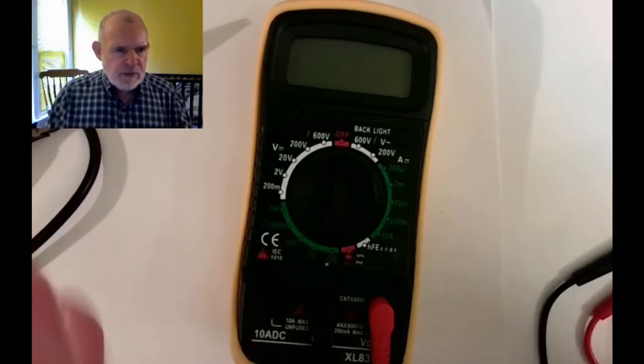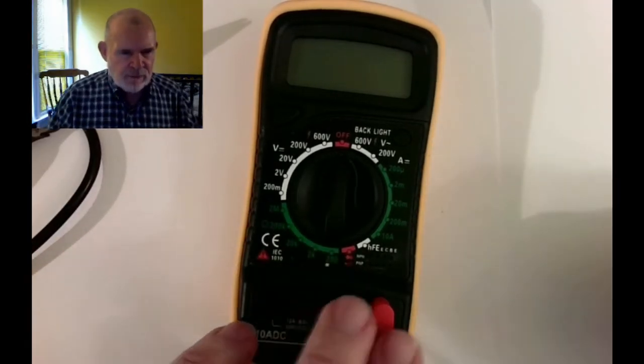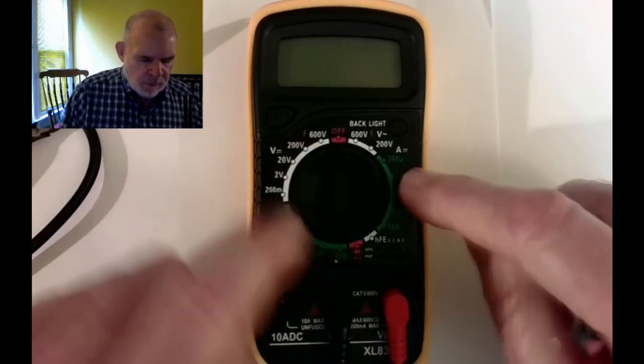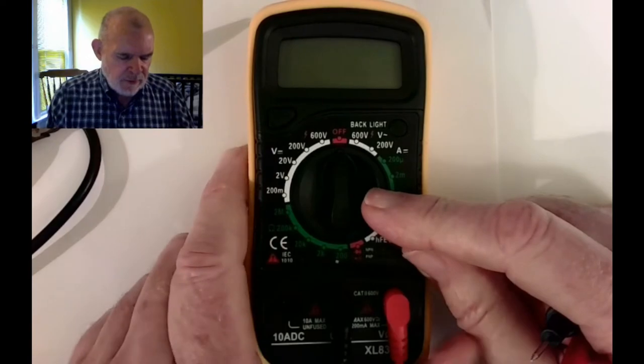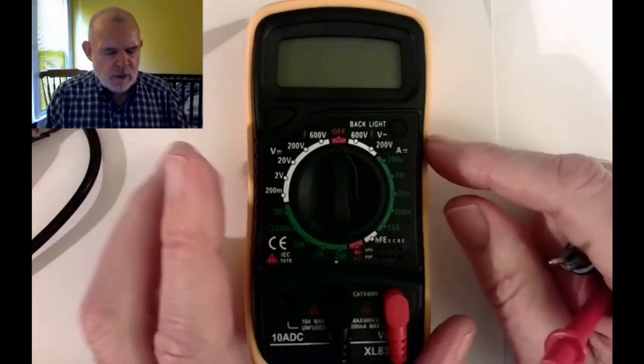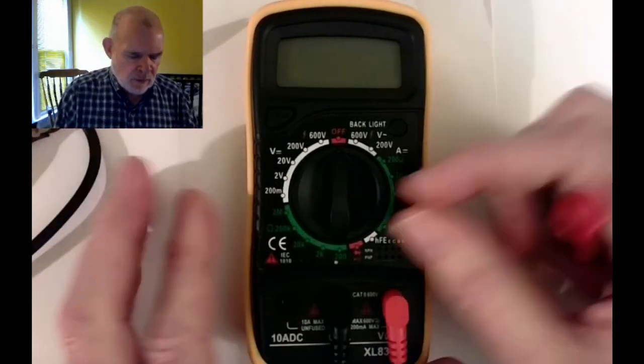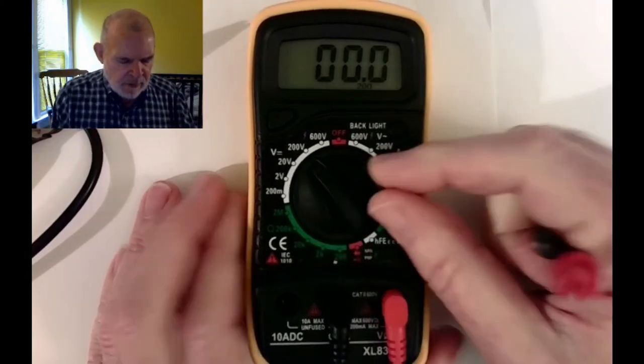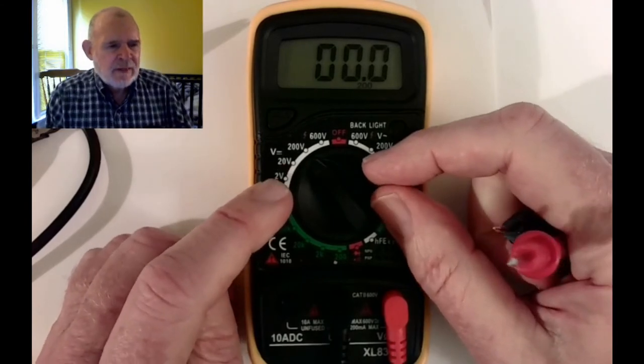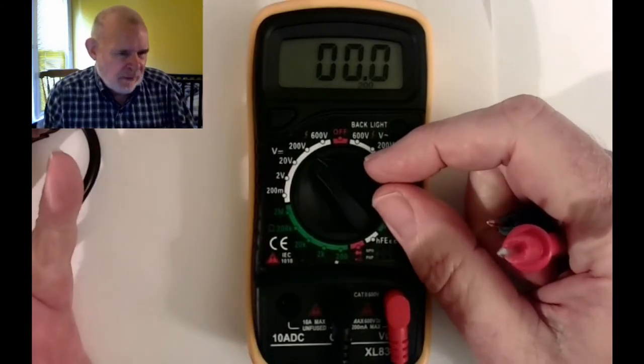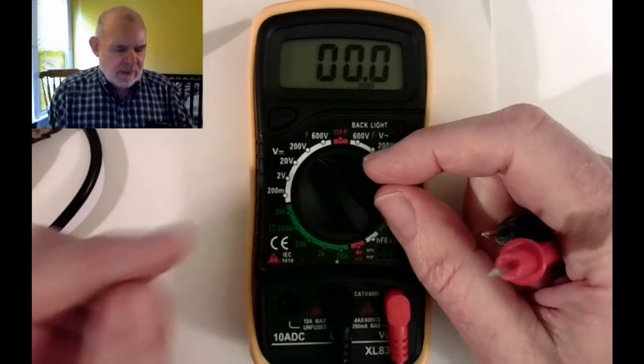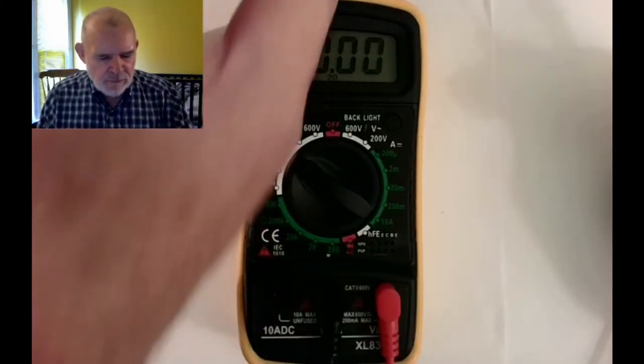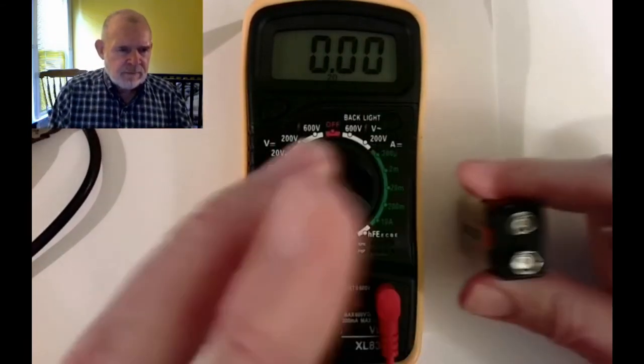The normal procedure, no matter what you're going to measure: you have your leads plugged in, you're going to select one set of these three ranges. Now typically, if you don't know what you're going to measure or the value, you want to set this to a higher range. But let me give you a clue about voltage DC - every battery you have in your house is going to be less than 20 volts. So you could start on 20 volts, and actually 20 volts gives me a plenty good reading.